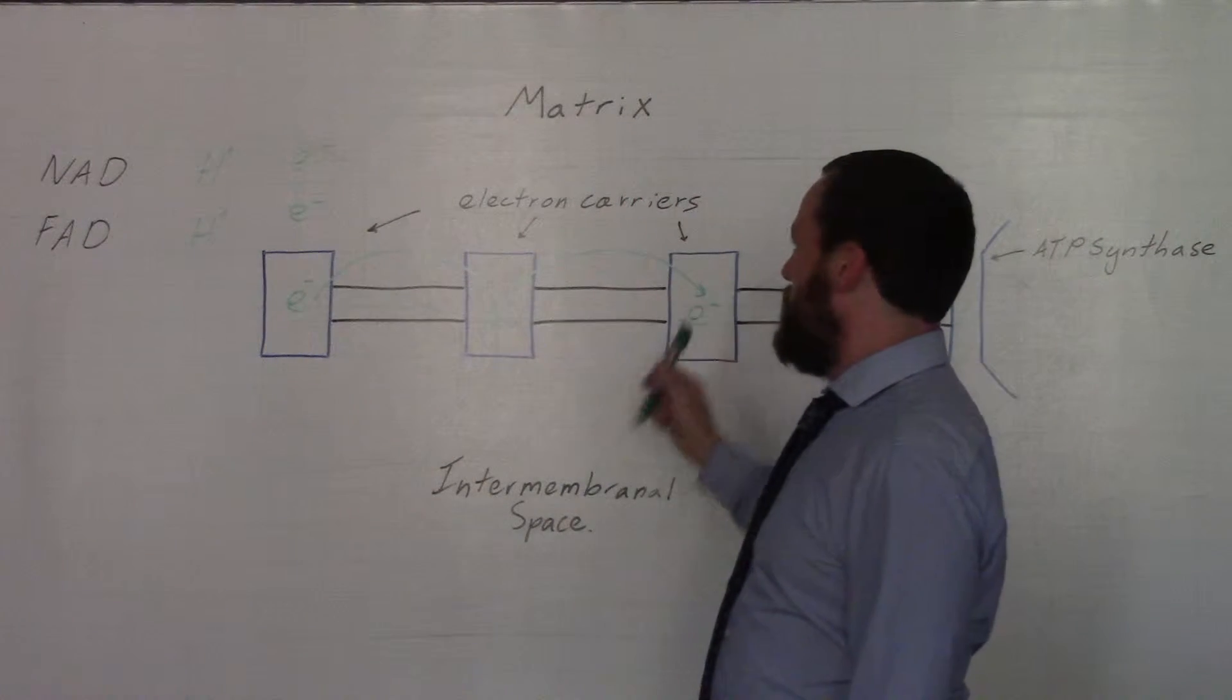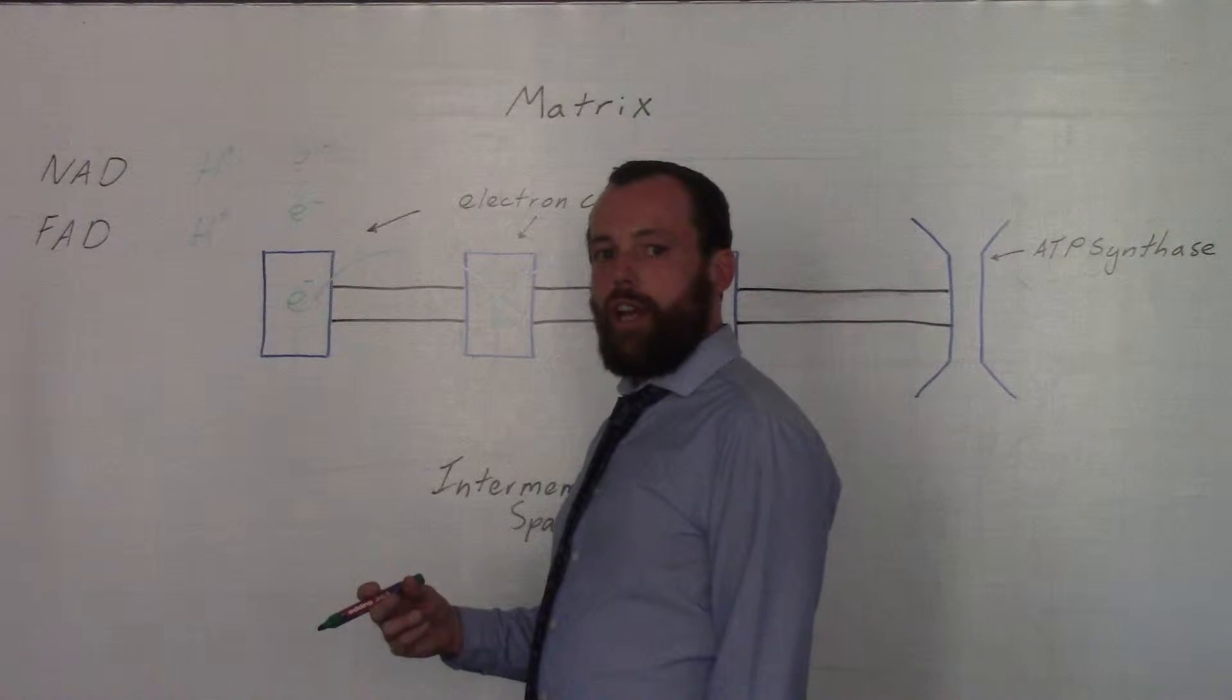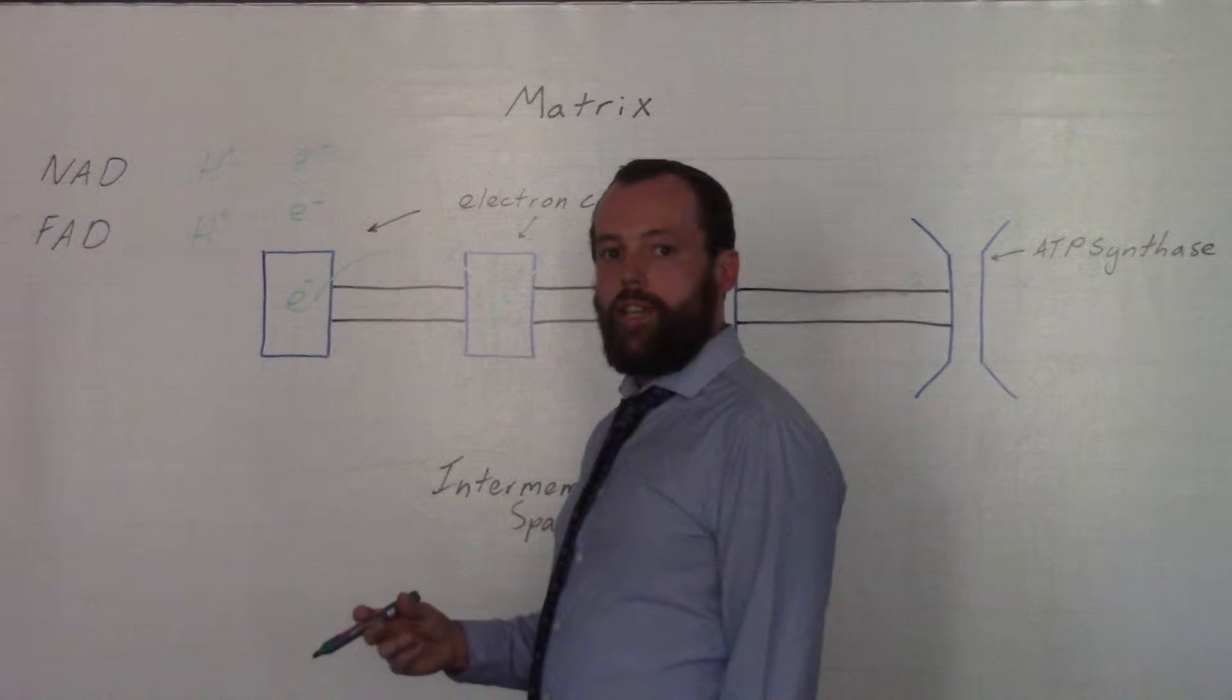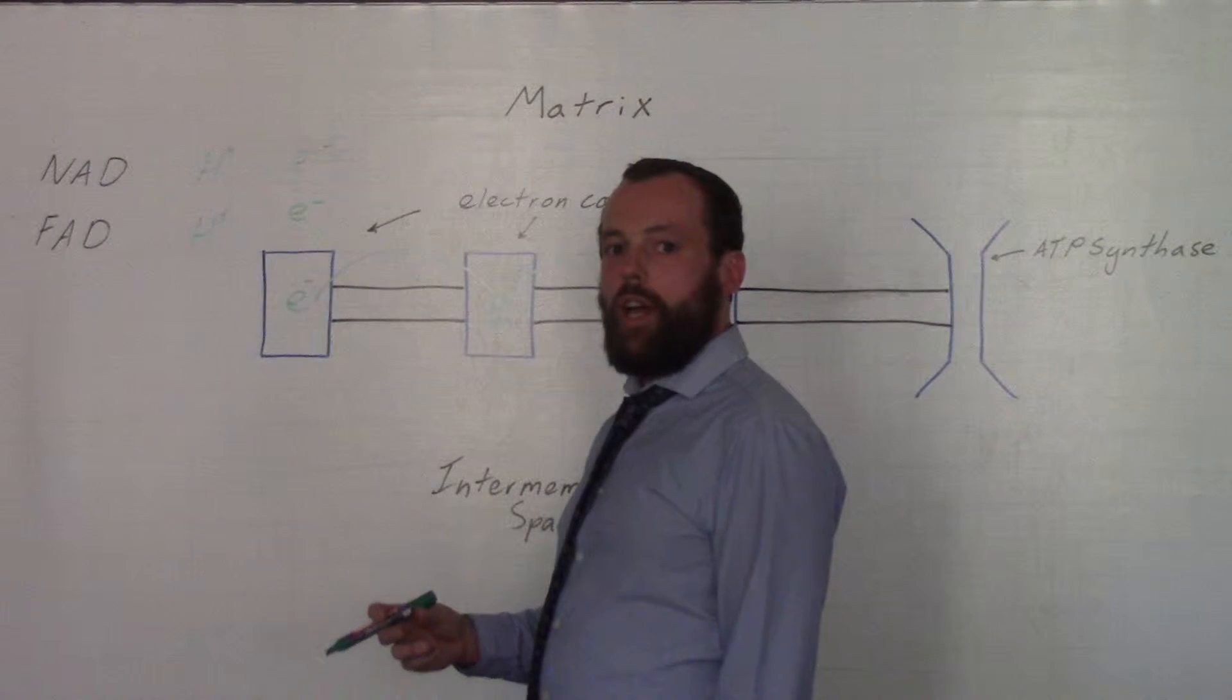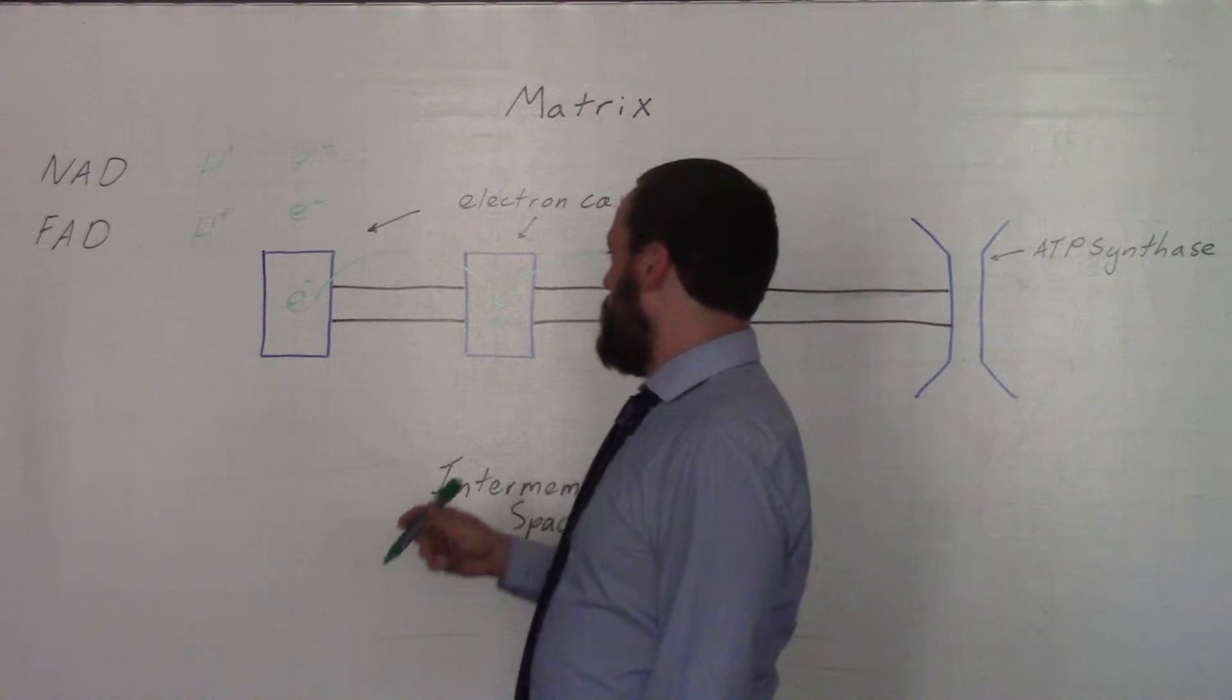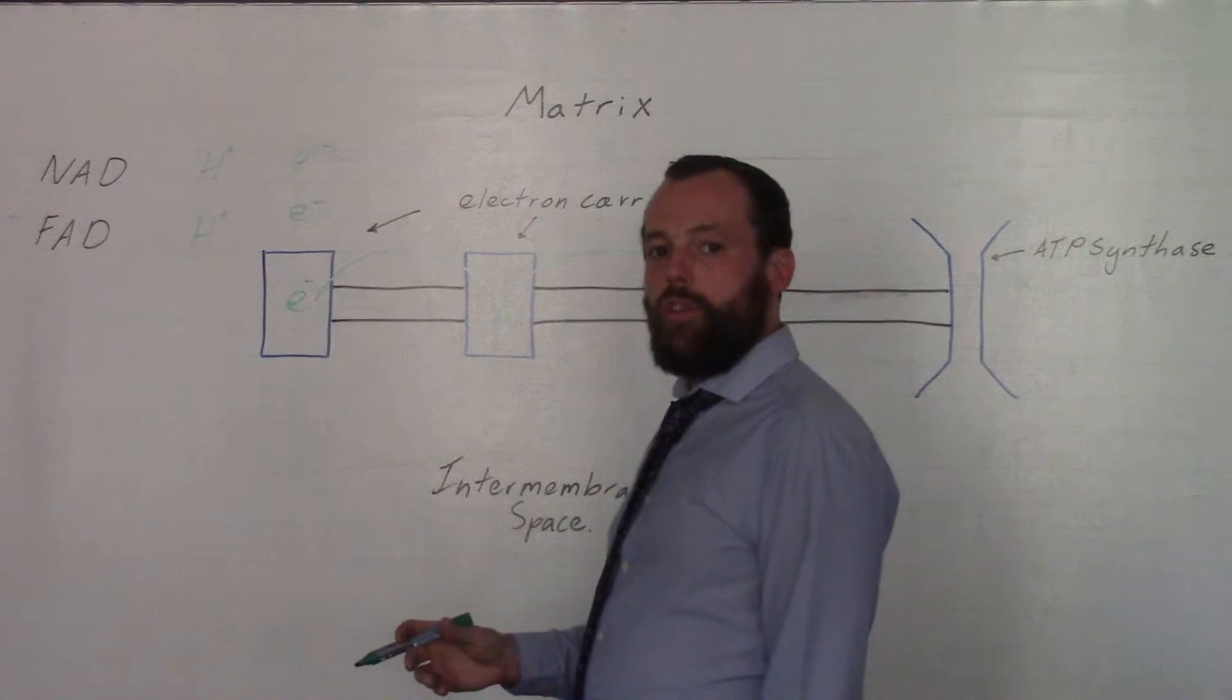As the electrons move along the electron carriers, they are used to form ATP from ADP and inorganic phosphate. The electrons also lose energy at each level, and this energy is given off as heat.